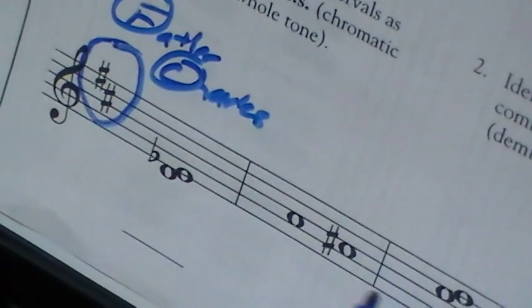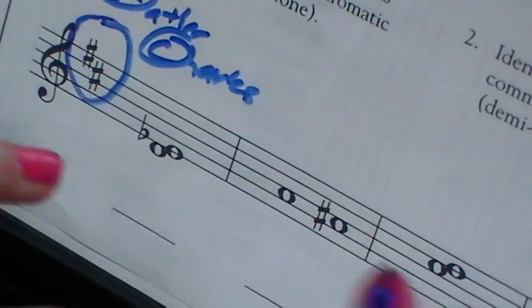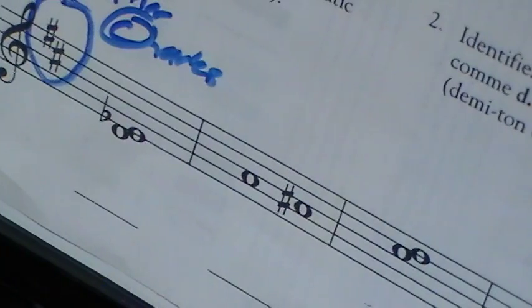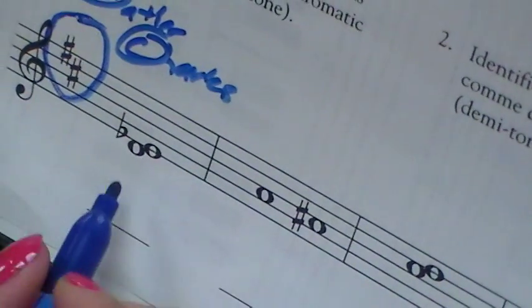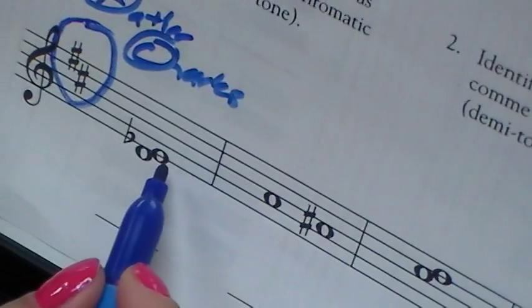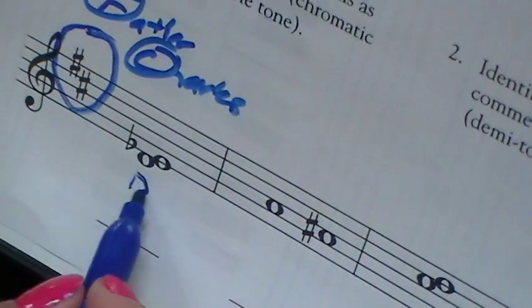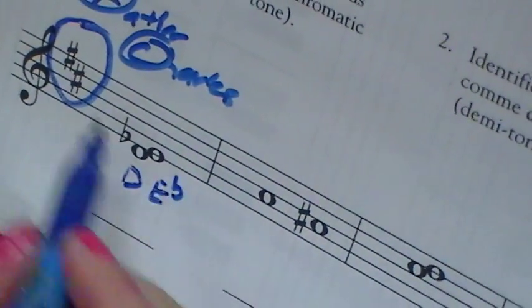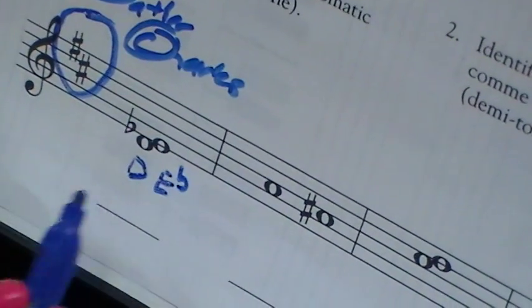So any F or C on the staff itself will have to be raised. So let's take a look here and know our notes. From D to E flat. So that's the question, D to E flat. We see that the key signature doesn't affect these two notes.